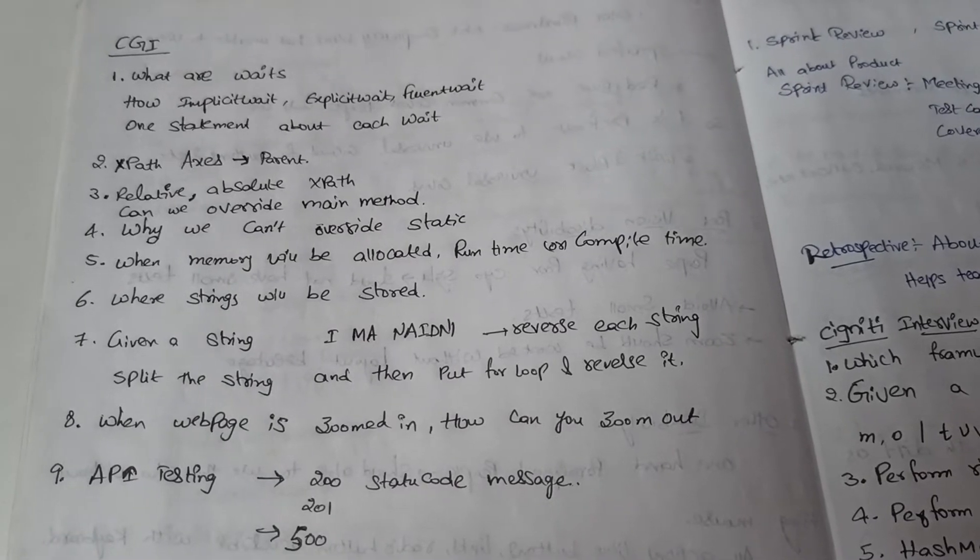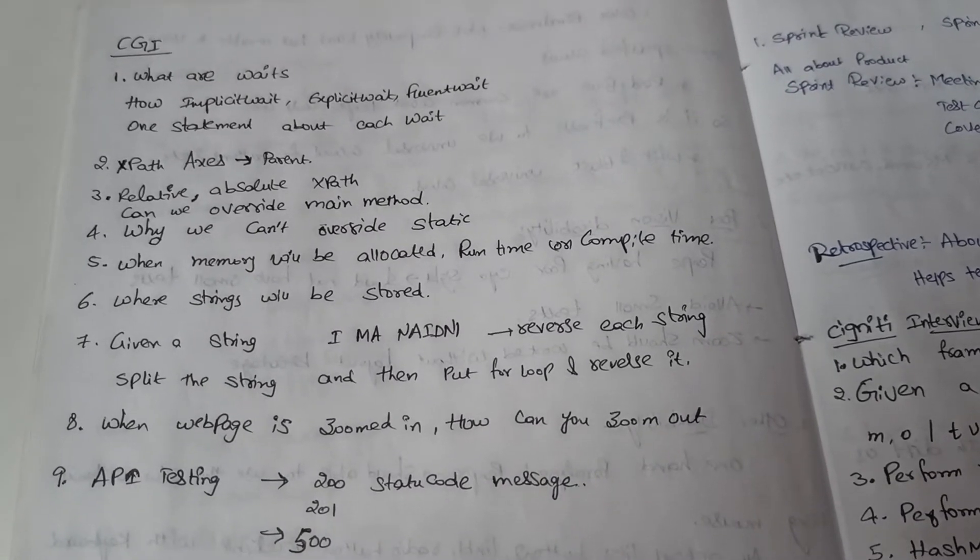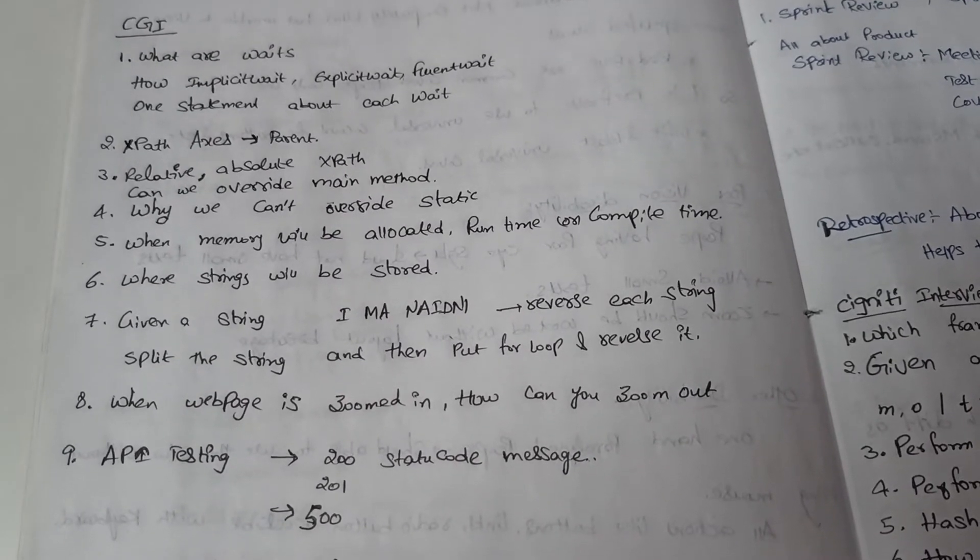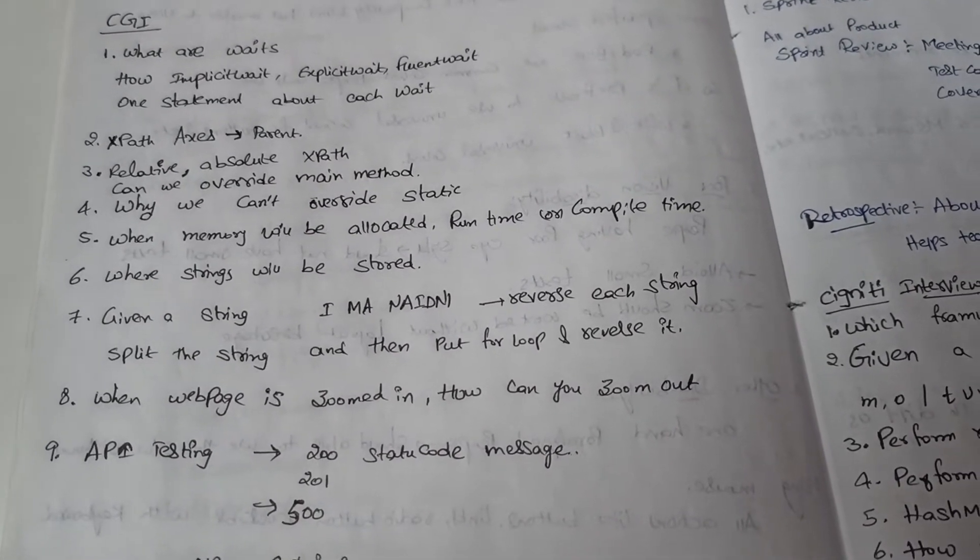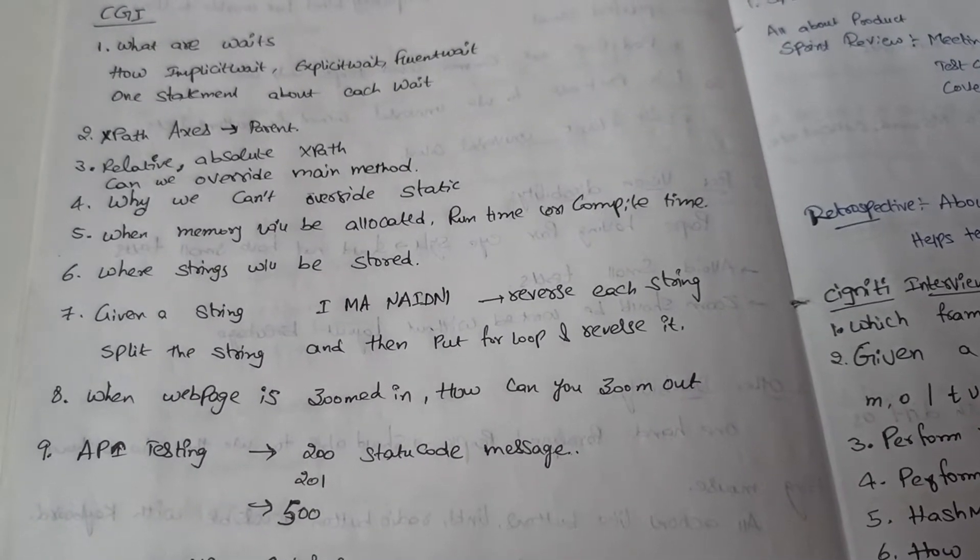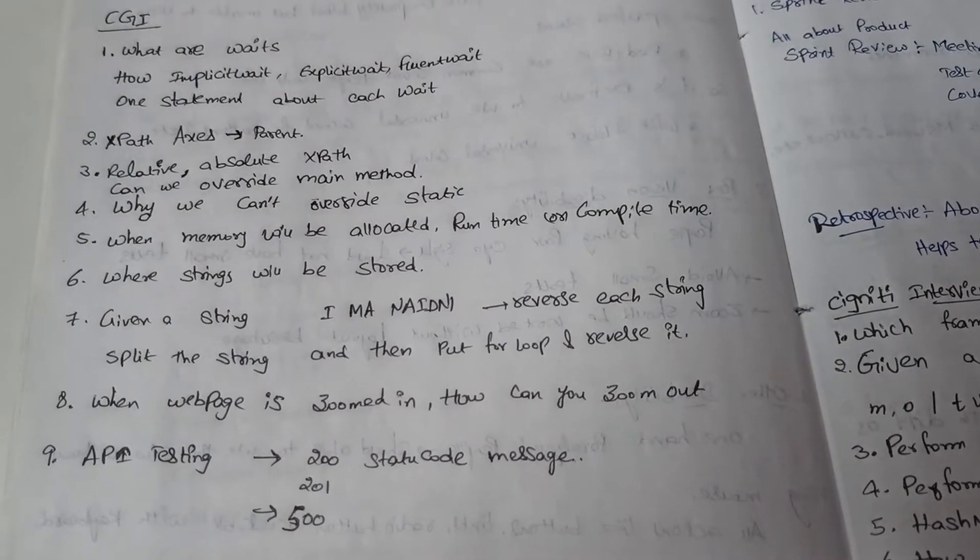Hello all, these are CJ automation testing interview questions. The first question is what are waits and the different types of waits. We have to mention and explain how implicit wait, explicit wait, and fluent wait will work.